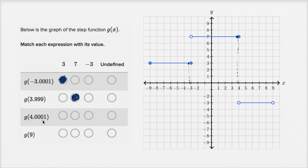g(4.00001). So g(4) is still 7, but as soon as we go above 4, we drop down over here. So g(4.00001) is going to be -3. Actually, let's focus on that a little bit more. How did I know that?